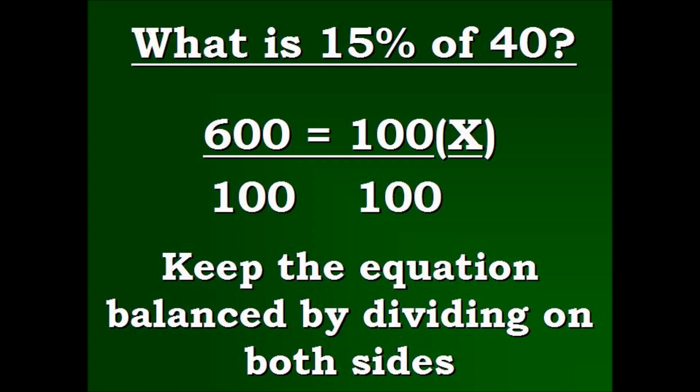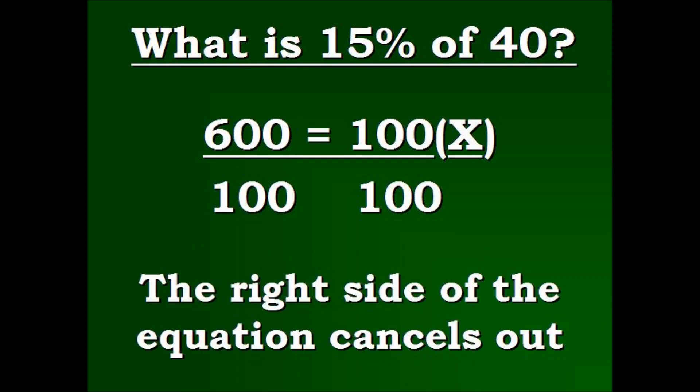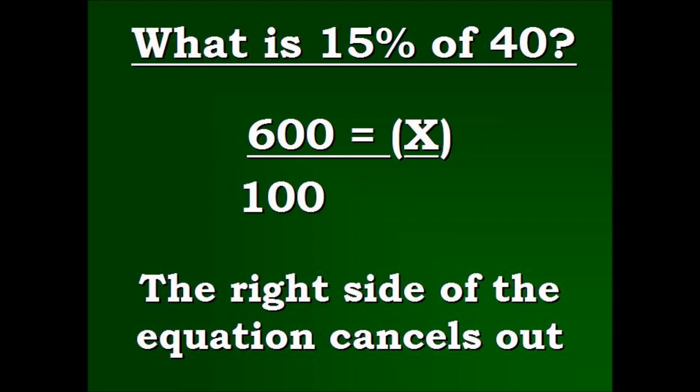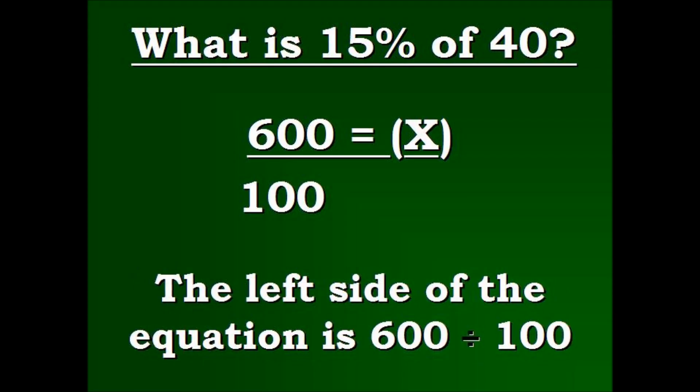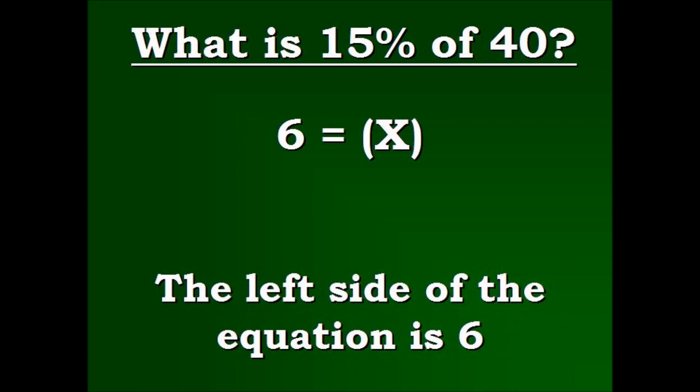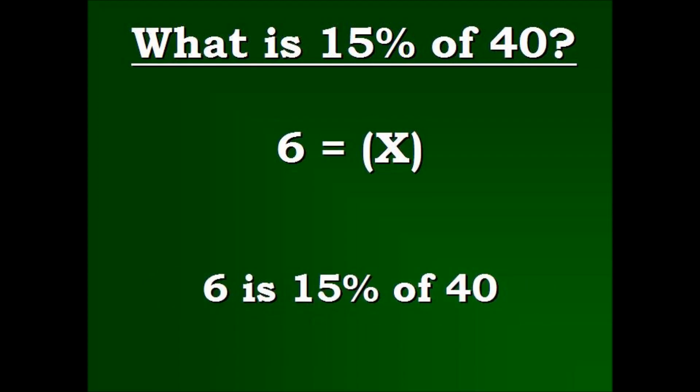Now, you can see with the 100x, that should cancel out. So we have x by itself on that side of the equation. Now we have to continue and simplify 600 divided by 100, which divided simply gives us 6. So now we've got an x by itself and we have our solution. 6 is the answer to our problem. What is 15% of 40?